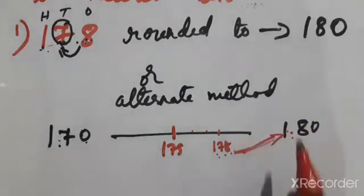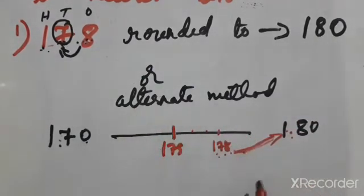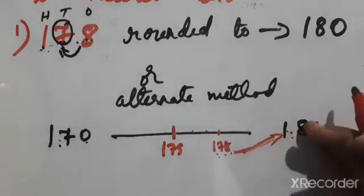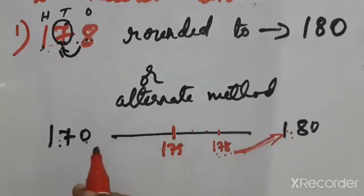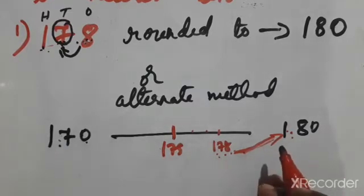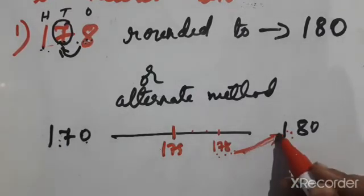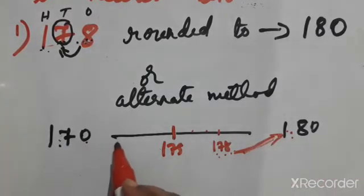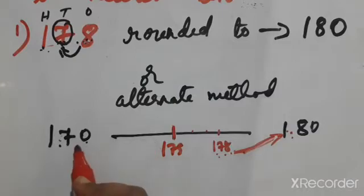Both answers are correct. This is the alternate method. Five or above five means we round up. Less than five — one, two, three, four — means we round down. So five or greater than five means rounded up, and one, two, three, four means rounded down.